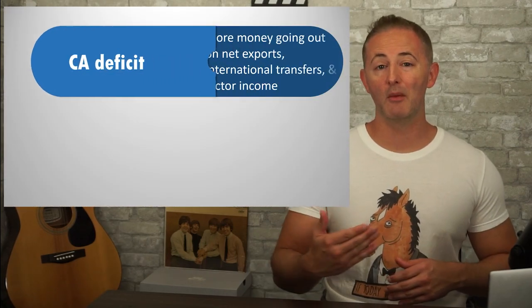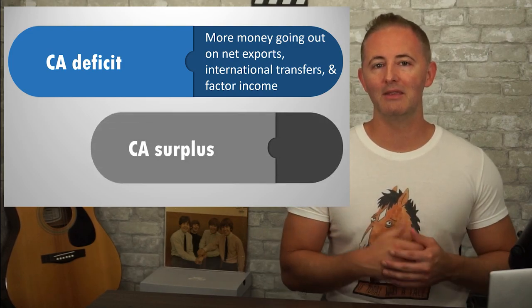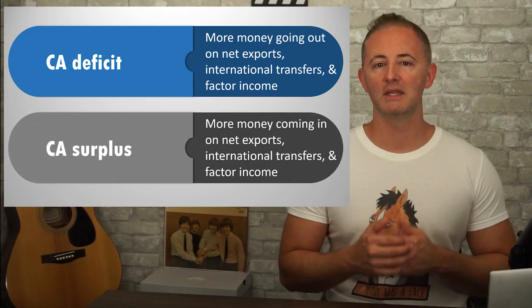On tests, there are usually two main things you'll be asked: one is to identify what types of transactions affect the current account, and the other is to identify whether a particular transaction would increase or decrease the current account balance. The current account is not always balanced; it often shows a surplus or deficit. When more money is going out than coming in, the current account is in deficit. When more money is coming in than going out, it's in surplus.